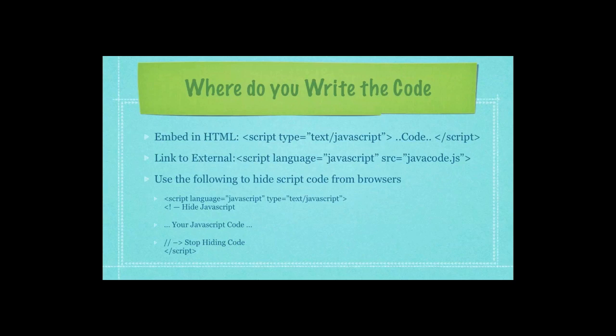So where do you write your JavaScript code? Well, there's actually two ways, just like Cascading Style Sheets. You can either embed directly into the HTML, and you would do that by using the script tag, followed by type, quote, text, forward slash JavaScript, and then type out all your code, and end up with a closing script tag.